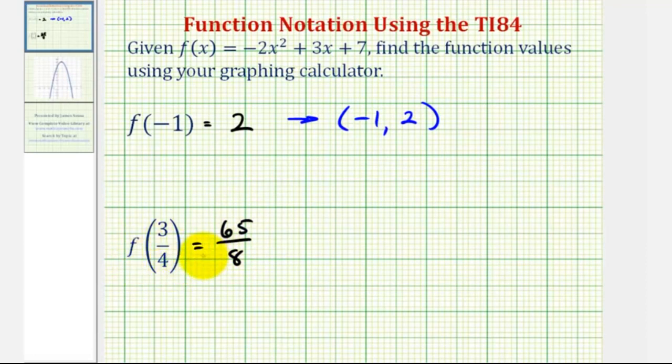So again, if f(3/4) equals 65/8, then the function would have to contain the point with an x-coordinate of 3/4 and a y-coordinate of 65/8.